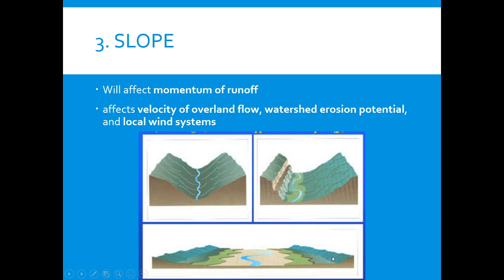You might also have watersheds that are very vast, where you get a very clear amount of erosion closer to the water, and that erosion is bringing material from on top of the mountains and bringing it down.